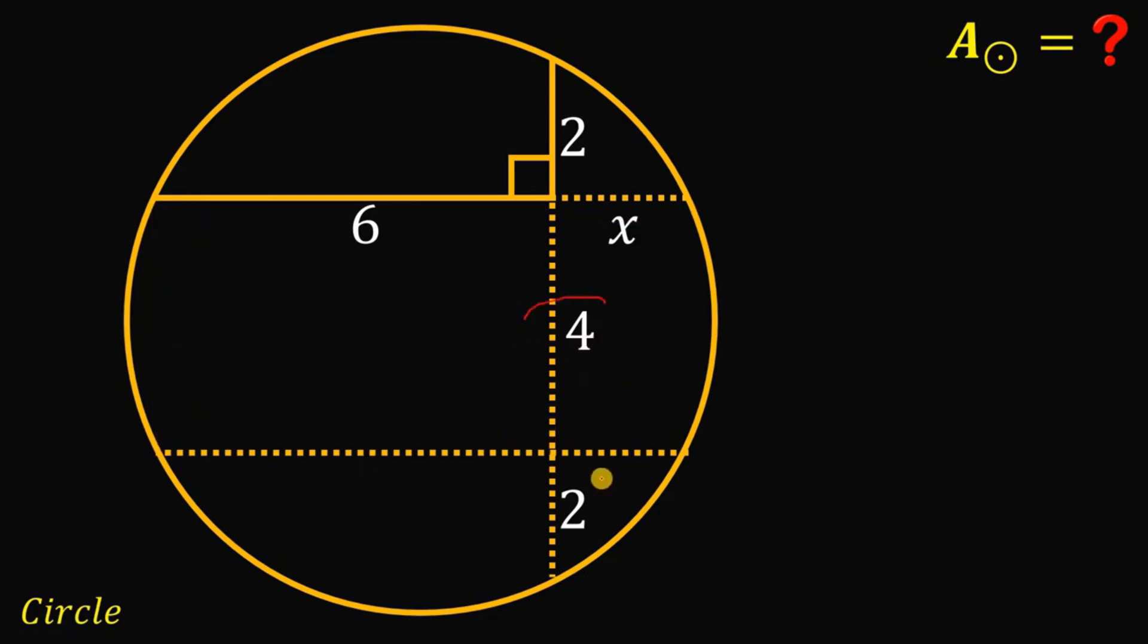Now, this 4 plus 2, this segment must be equal to 4 plus 2 or simply equal to 6. Now, we can say that x must be equal to 2 by symmetry. But,